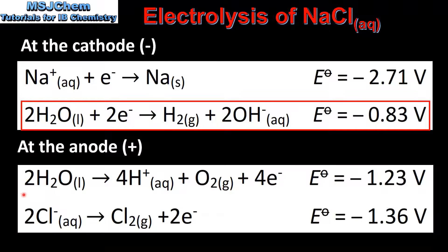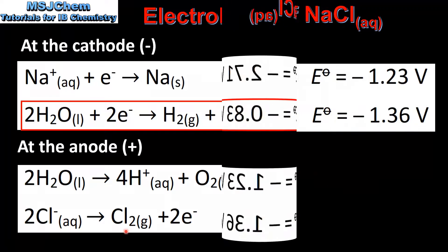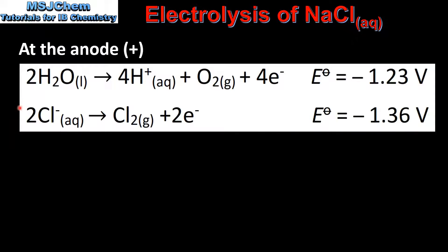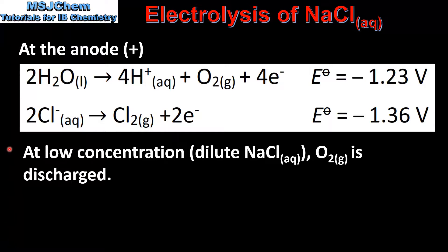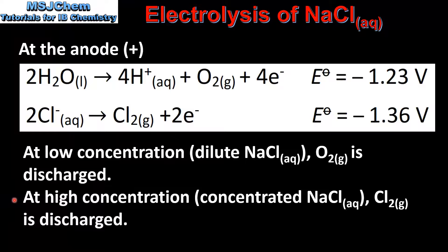At the anode there are two possible reactions: the oxidation of water to form oxygen gas, and the oxidation of chloride ions to form chlorine gas. Whether we get oxygen gas or chlorine gas at the anode depends on the concentration of the sodium chloride solution. At low concentration (dilute solution), oxygen gas is discharged; at high concentration (concentrated solution), chlorine gas is discharged.